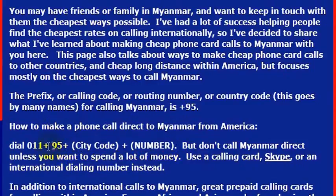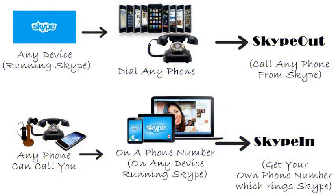Again, the country code for Myanmar is 95. But I wouldn't really recommend calling direct — your phone company will charge you a lot of money. If you want to call a phone number, I really recommend using Skype.